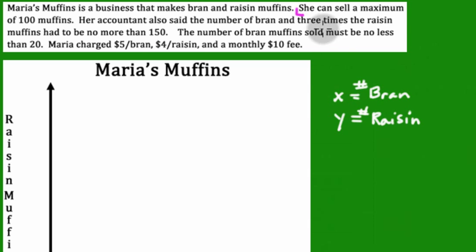She can sell a maximum of 100 muffins. That means we're going to take x and y, x and y together, and we realize that she can sell a maximum of 100 muffins. She cannot sell more than that. That's what maximum means. That means she can sell less, and she can sell 100. She just can't sell more than that. There's our first inequality based on that second sentence.